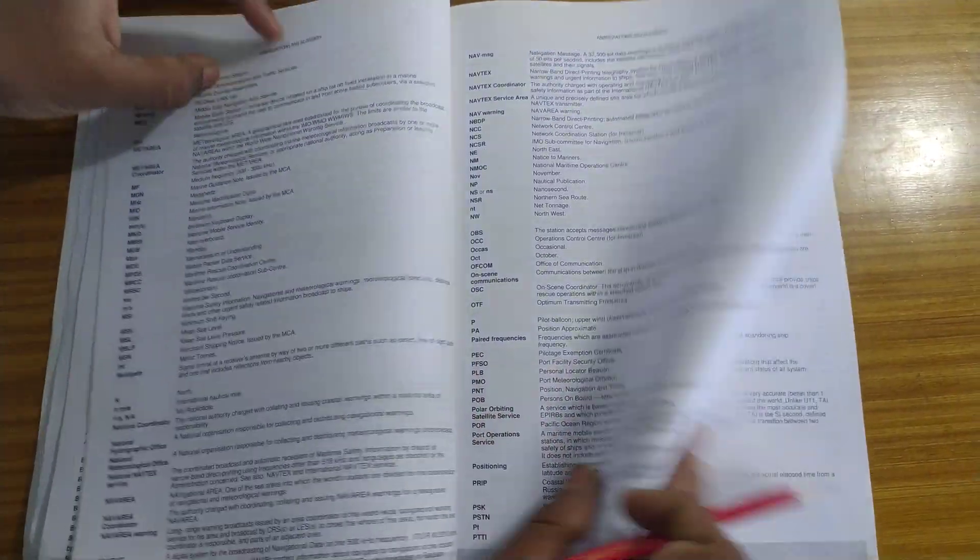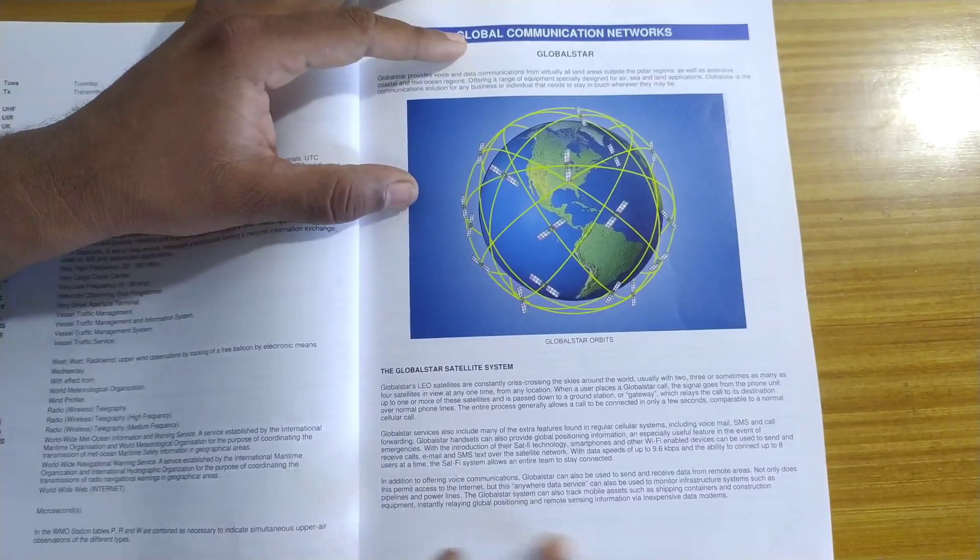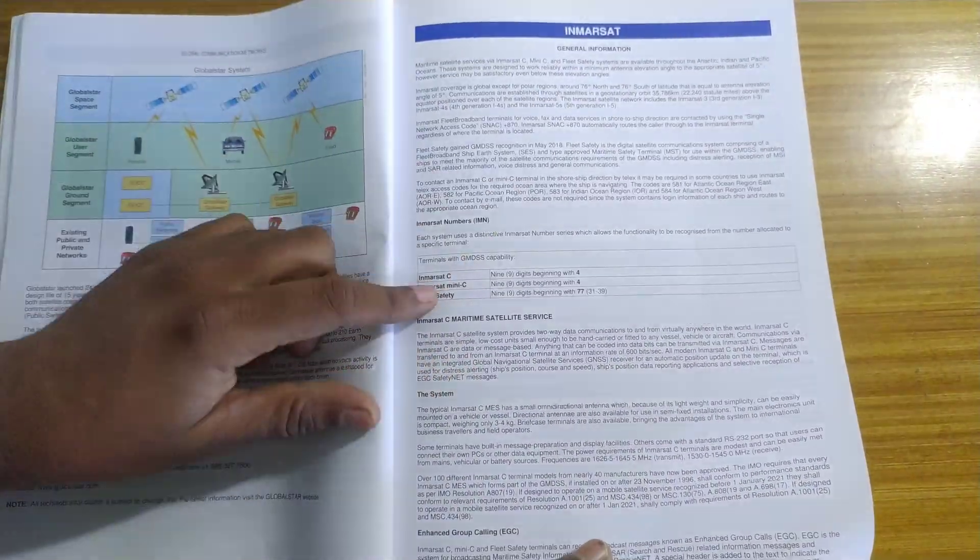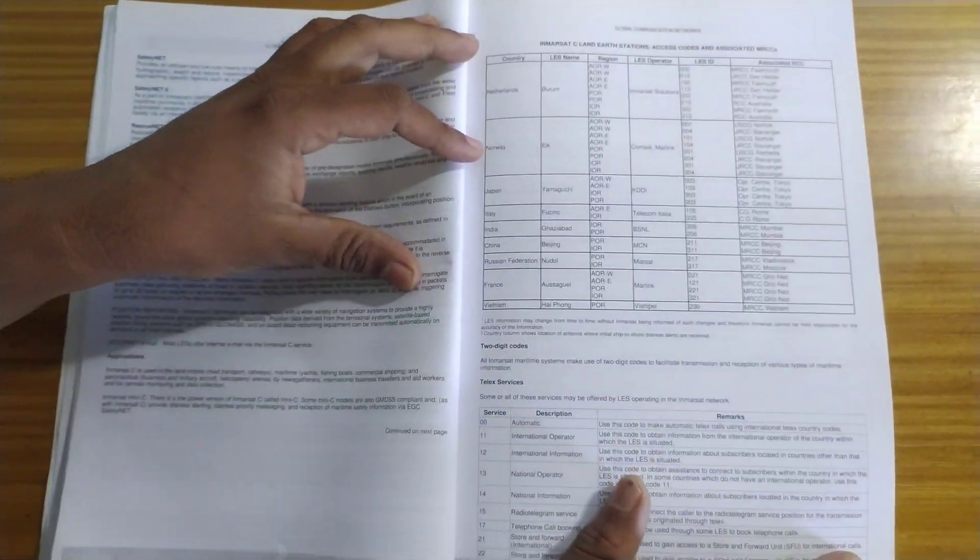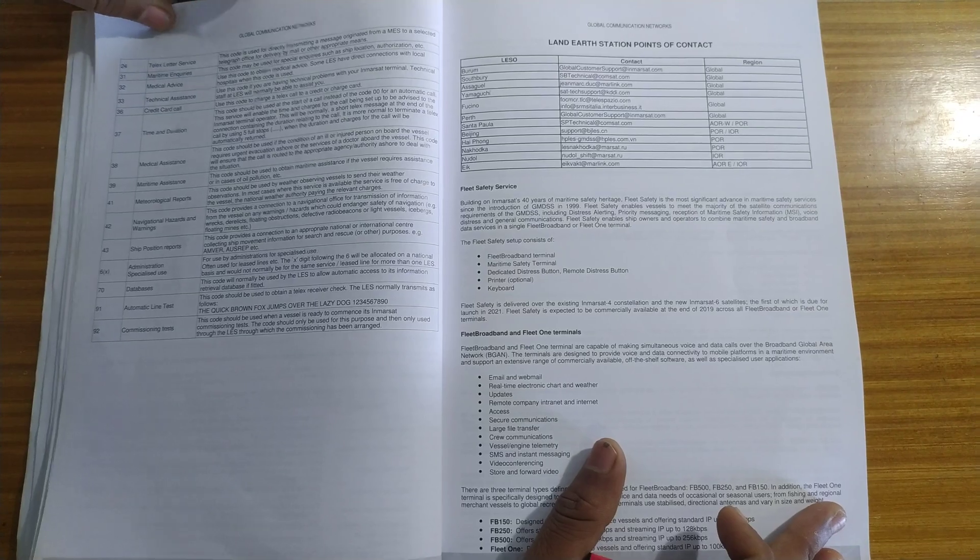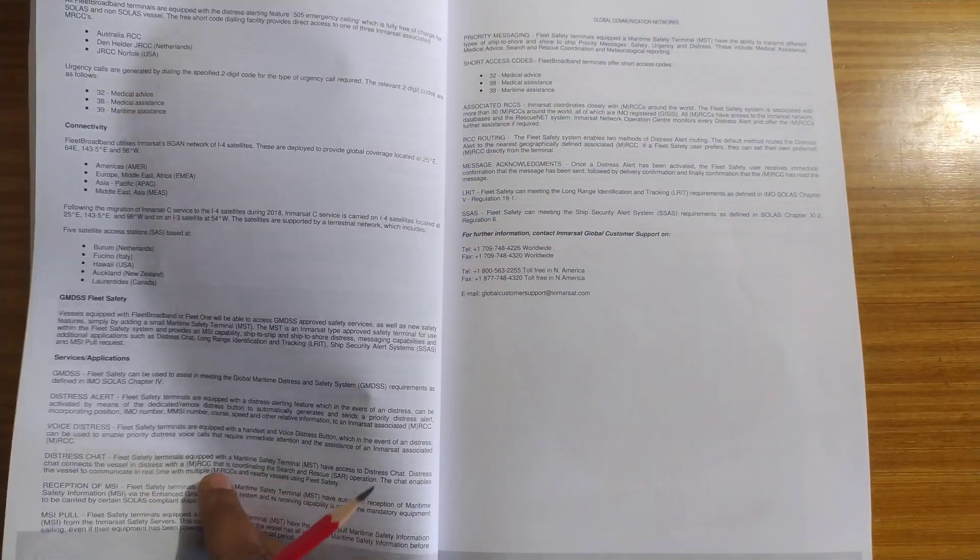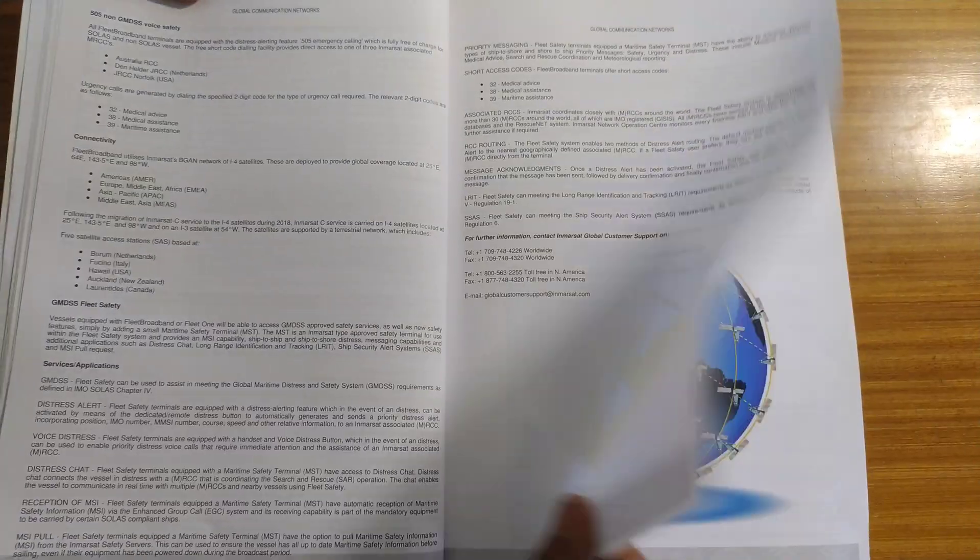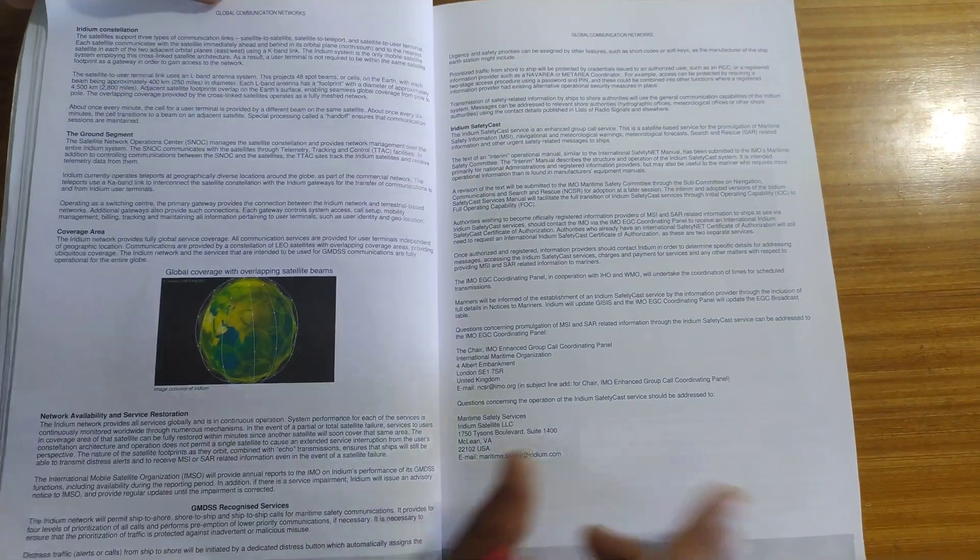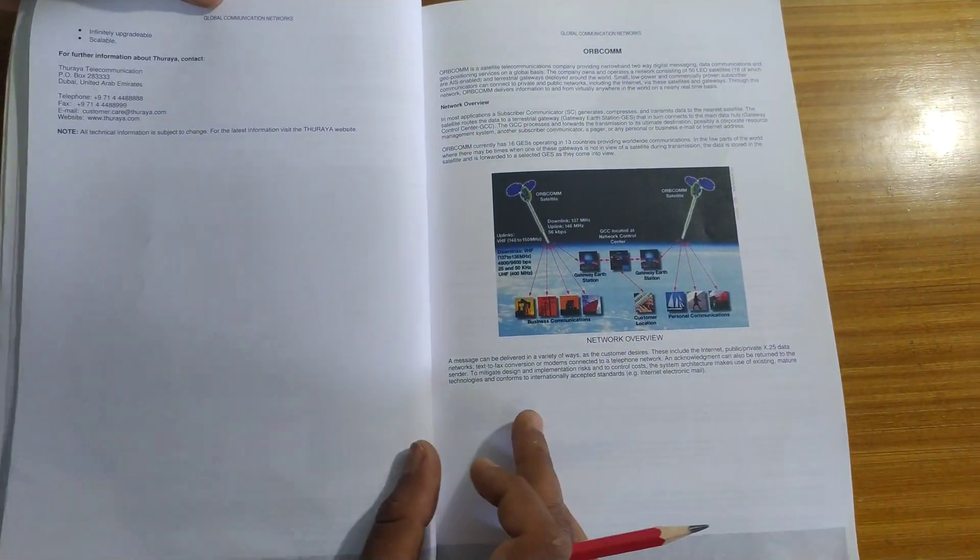After this comes the global communication network. They will be discussing all the communication systems in the world. This is Globalstar, then comes the Inmarsat, how to identify an Inmarsat. Then all the Inmarsat and associated MRCCs. You can just pause the video and read it if you want. Next comes the Iridium, GMDSS, then Thuraya, and then OPCOM.